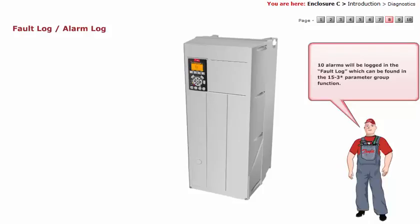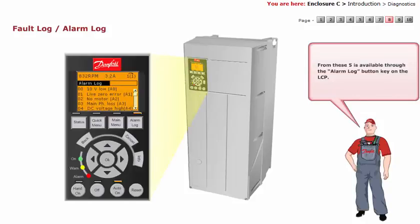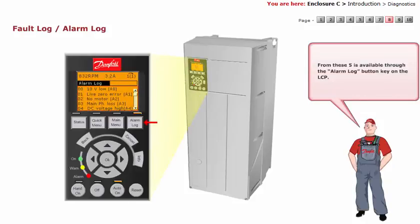Fault log or alarm log. 10 alarms will be logged in the fault log, which can be found in the 153 parameter group function. From these, 5 is available through the alarm log button key on the LCP.